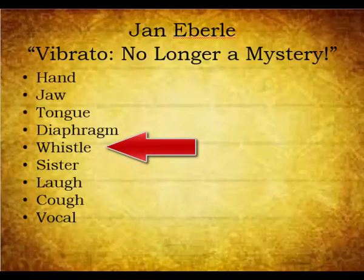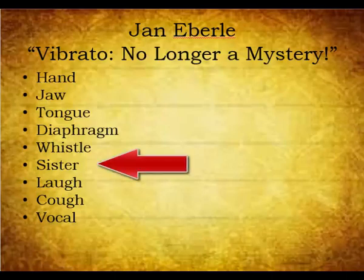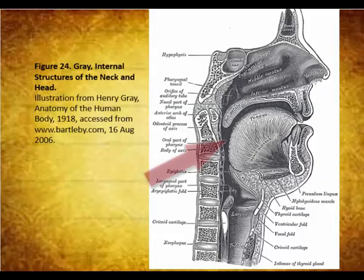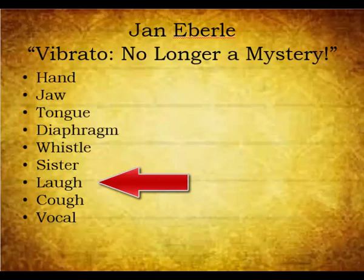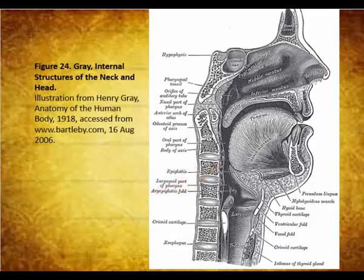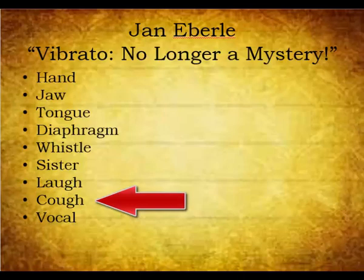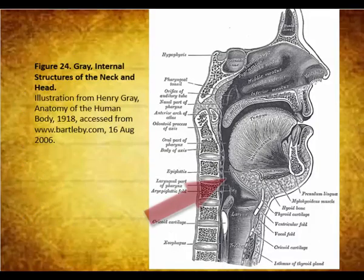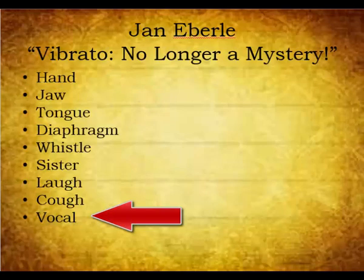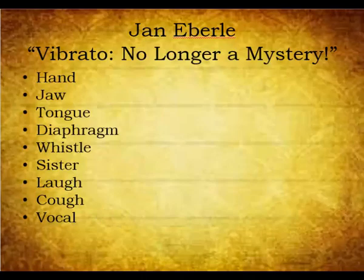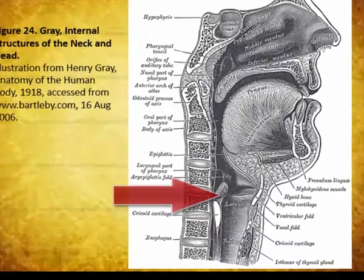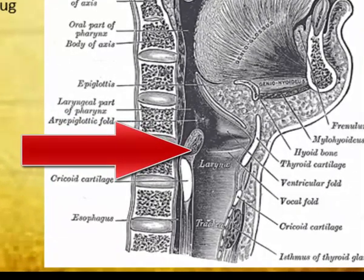The whistle vibrato is made with muscles under the chin. The sister vibrato is made in the upper throat in the lower tongue region, and the sound 'siss' is repeated. The laugh vibrato can be simulated with ha-ha-ha-ha-ha sounds and is located further down the throat. The cough vibrato is simulated with coughing sounds and is located yet even lower in the throat. The vocal vibrato is produced in a manner done by most singers — this is the most common vibrato, created by fluctuation in the vocal folds.